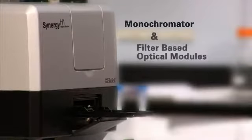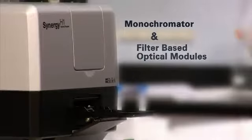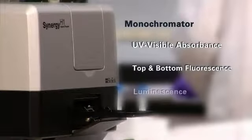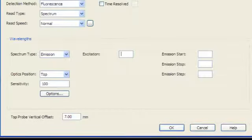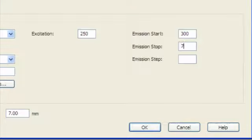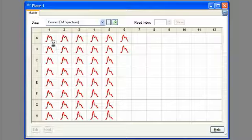Monochrometer and filter-based optical modules. The monochrometer-based module supports UV visible absorbance, top and bottom fluorescence and luminescence. Any wavelength from the low UV to the near infrared can be selected through the software, making this system extremely flexible and easy to use for a wide range of assays.